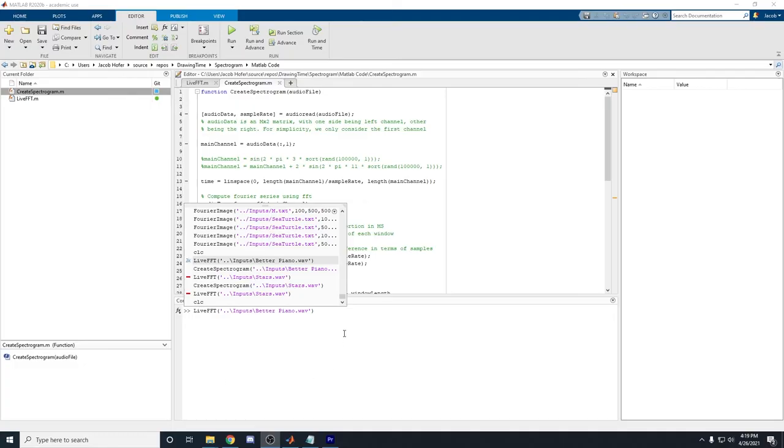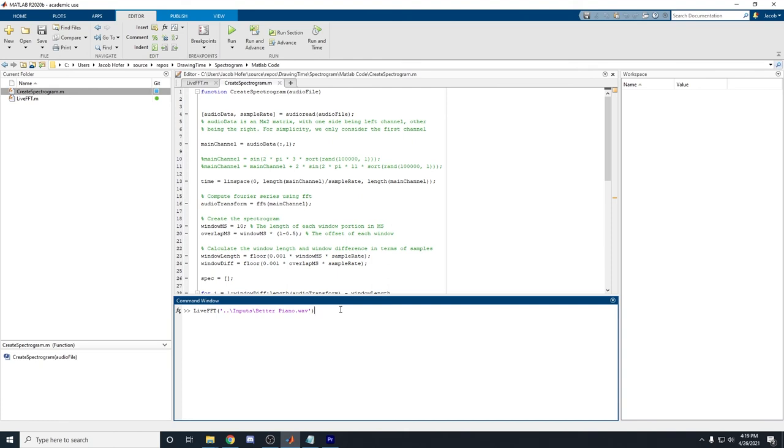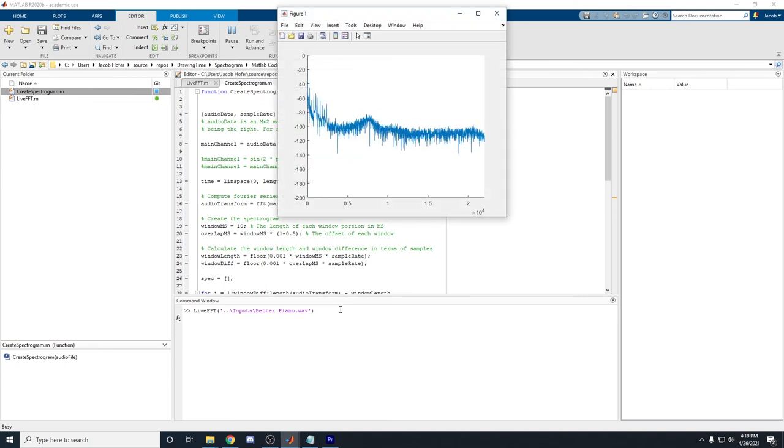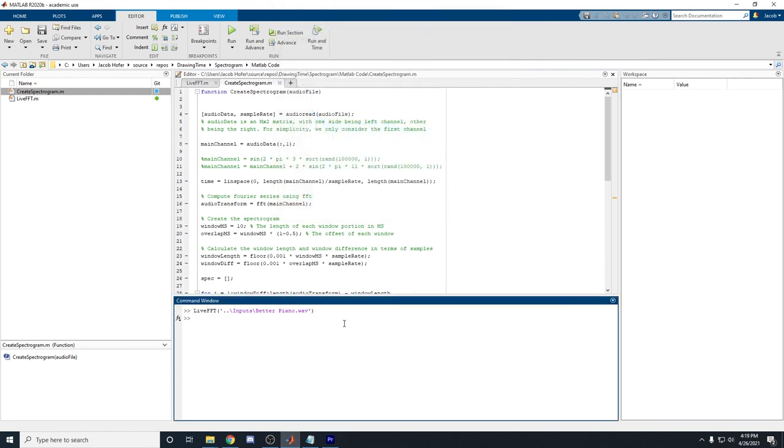So this is where things get fun. We now have two functions in MATLAB that I've created, one called Live FFT and one called Create Spectrogram. And Live FFT will give us a live Fourier transform of an input audio file.